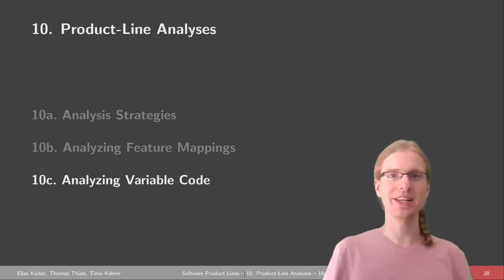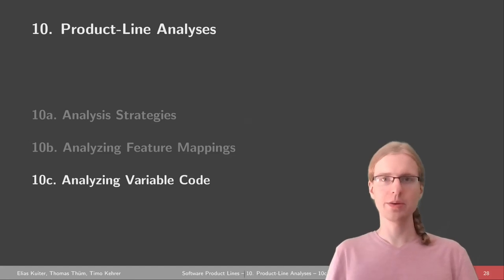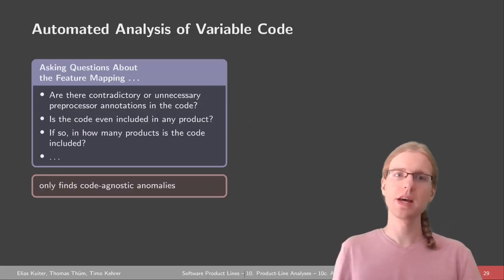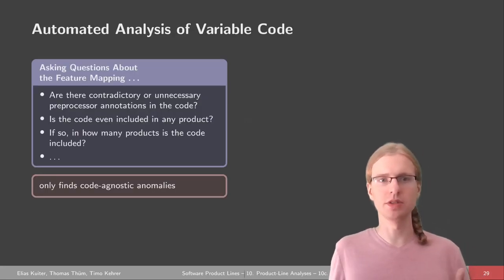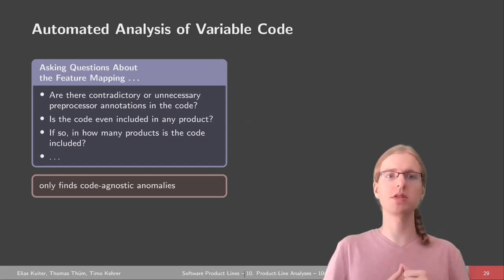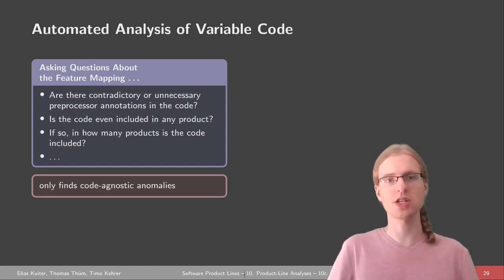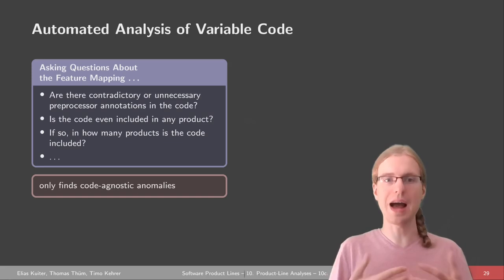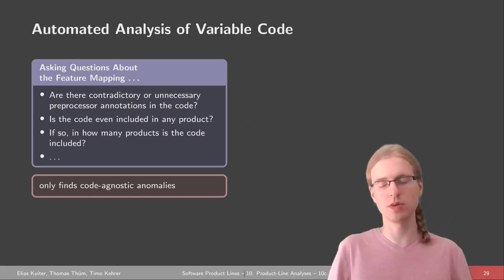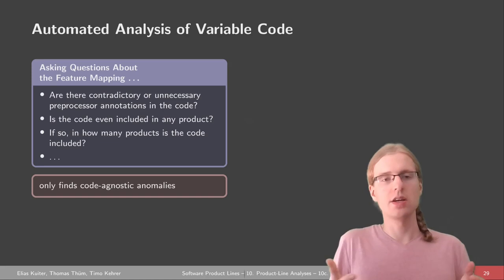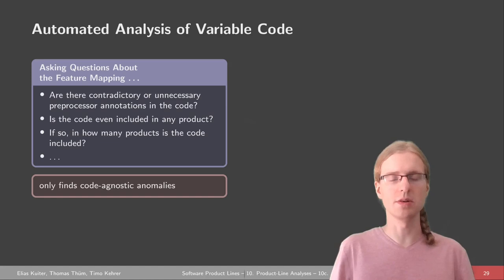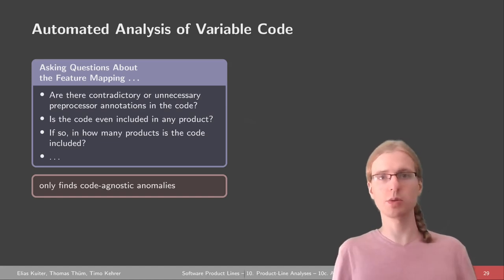Welcome back for the final part of the product line analysis lecture. We've seen some possibilities to analyze feature mappings for product lines and asked different questions about that — for example, whether there are contradictory or unnecessary preprocessor annotations, whether the code we're interested in is included in any product, and maybe using a SAT solver to ask in how many products the code is included and whether this is a critical number. These were all code-agnostic anomalies, not really caring about which programming language we used.